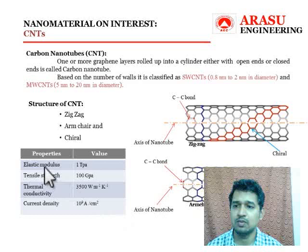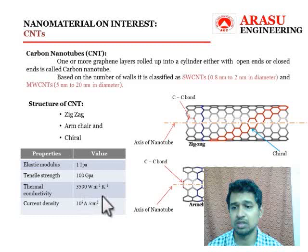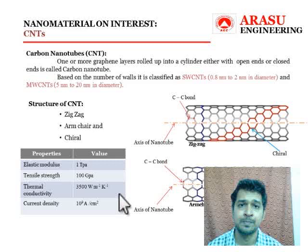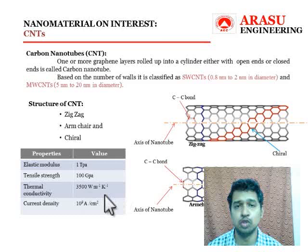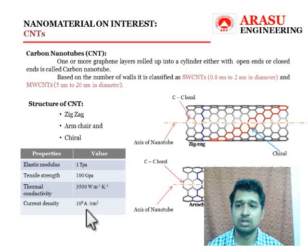The properties of carbon nanotubes are very impressive. The elastic modulus is in the range of 1 terapascal and tensile strength is in the range of 100 gigapascal — nearly tenfold greater than any industrial fiber. Thermal conductivity ranges at 3500 watts per meter kelvin, making it suitable for many heat transfer applications, especially in phase change materials where CNTs enhance the thermal properties of the base material. Carbon nanotubes also possess electrical properties, carrying up to 10⁹ amperes per centimeter square.